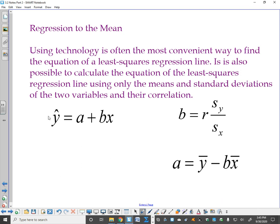So this is your prediction equation, your linear regression, your line of best fit. So y-hat equals a plus bx. a is your y-intercept, b is your slope. There are formulas that you can use to find a and b. To find b, which again is your slope, it is r, which is your correlation, times the standard deviation of your y's over the standard deviation of your x's.